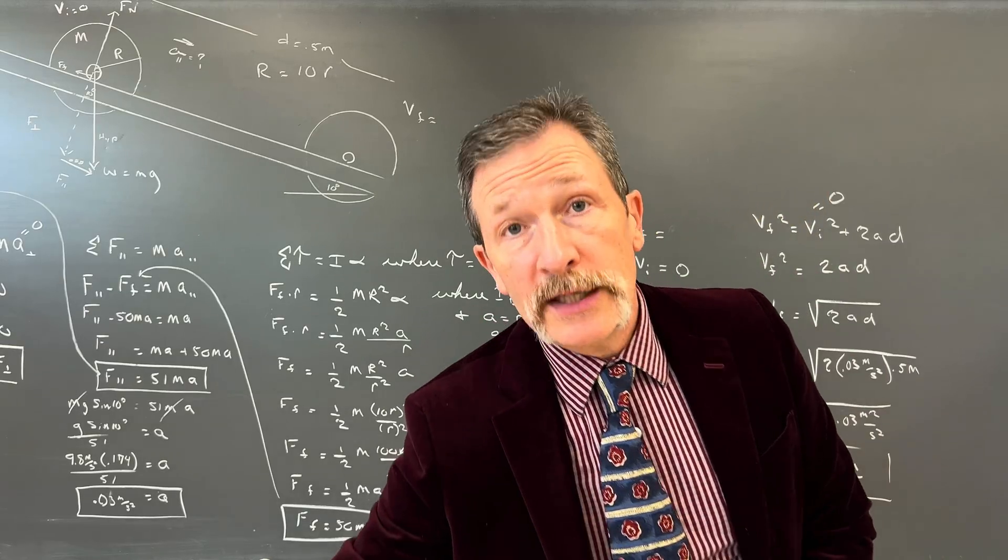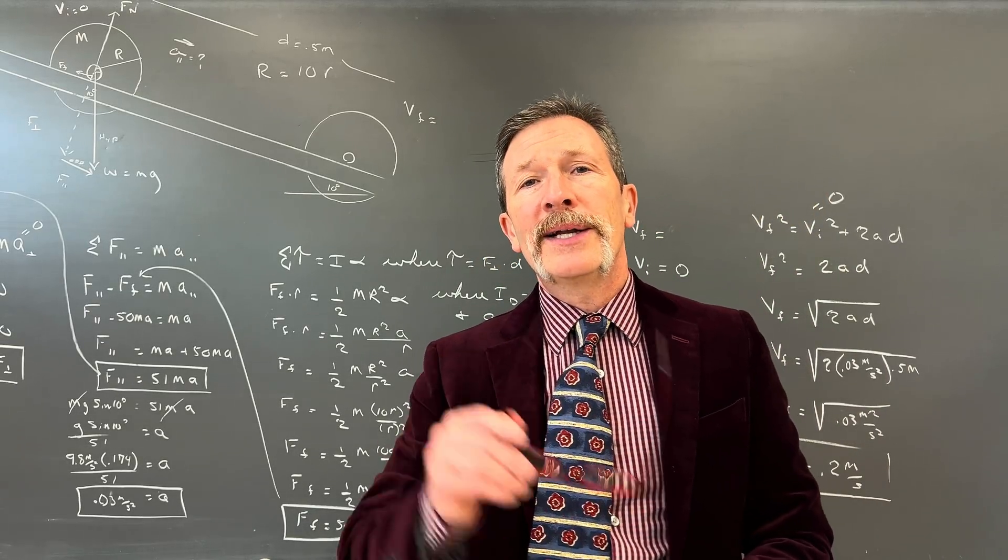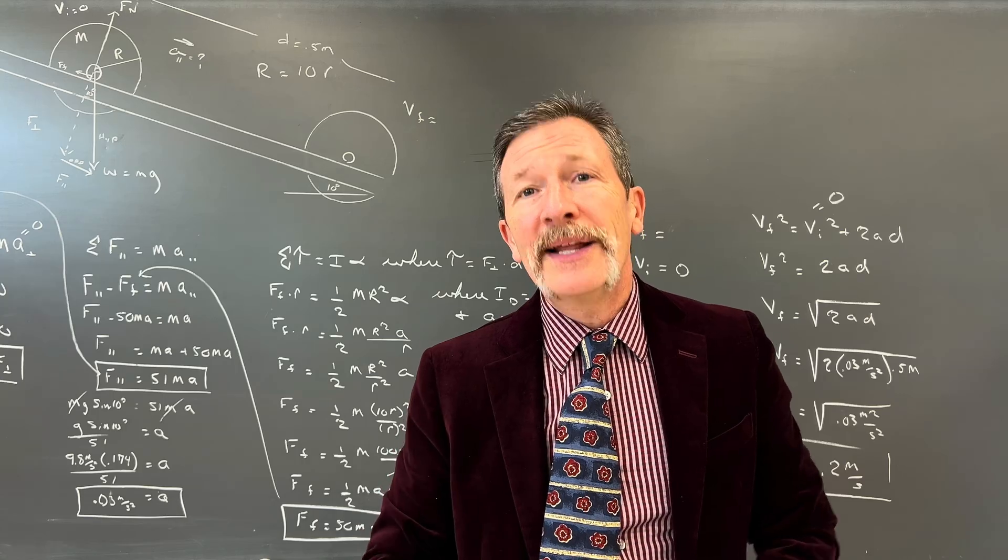So we would end up taking the square root of 0.03, and that would be meters squared all over second squared. And I'll put that in, 0.03 square root, and about 0.17. So let's say that that's about a velocity final equal to 0.2 meters per second.